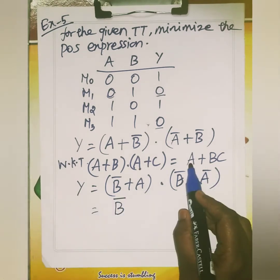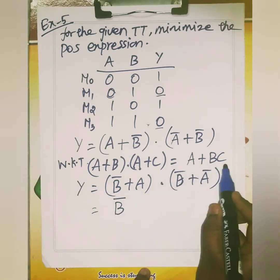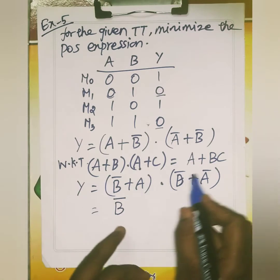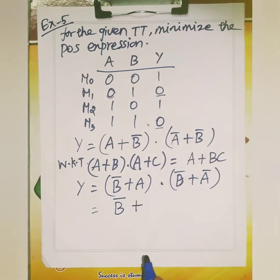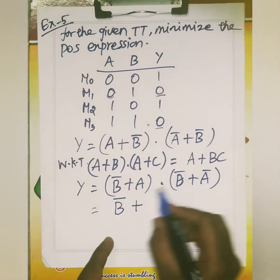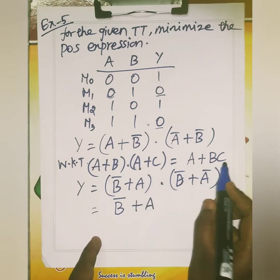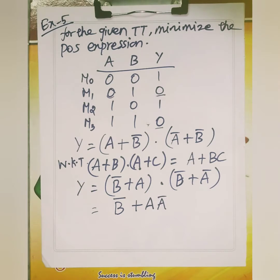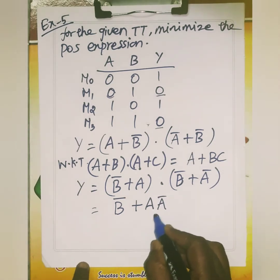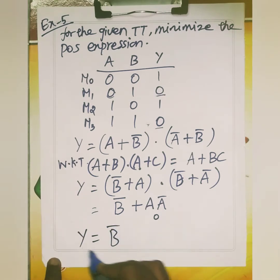According to the rule A plus BC, here in place of A we have B bar, and in place of C we have A bar. So this term becomes 0, and your answer is Y equals B bar.